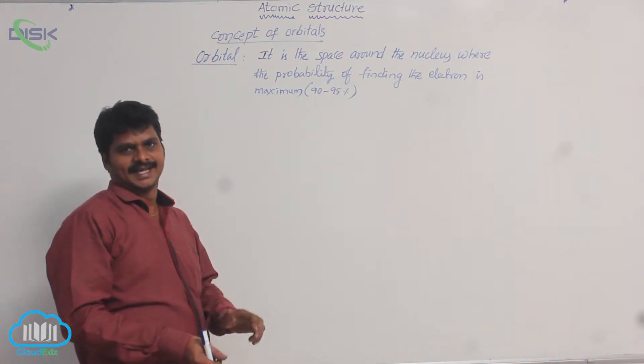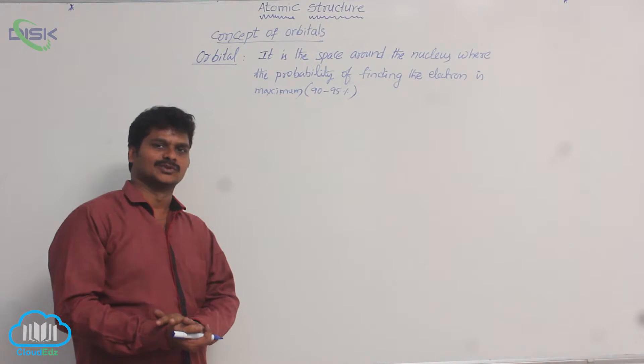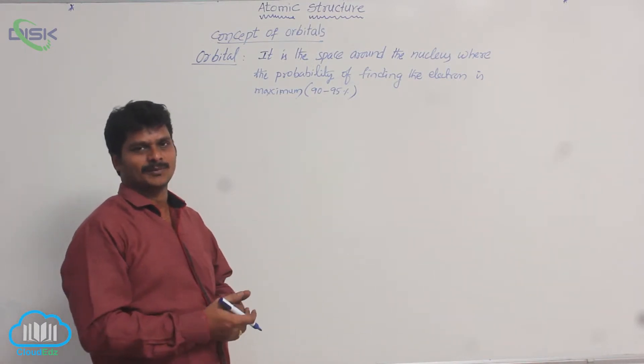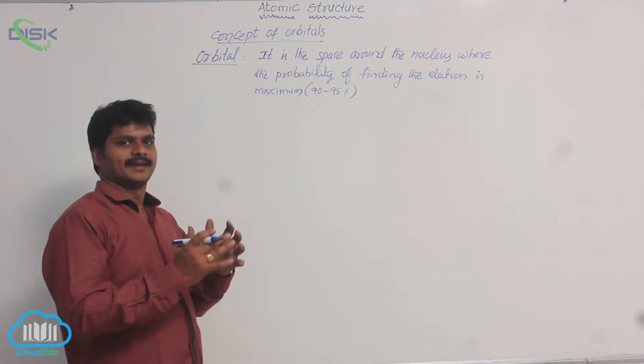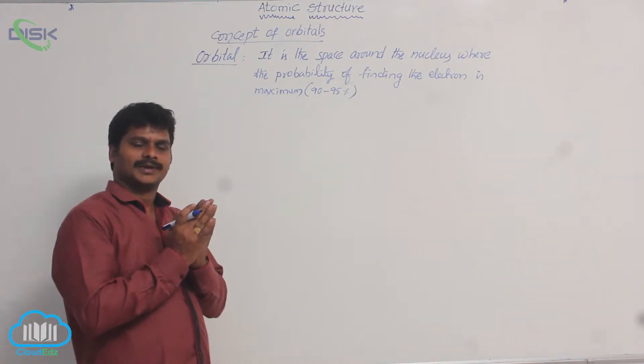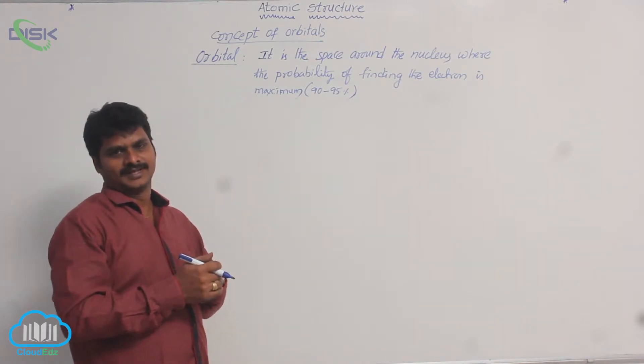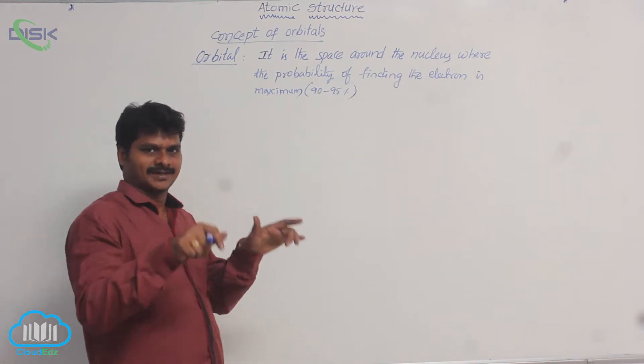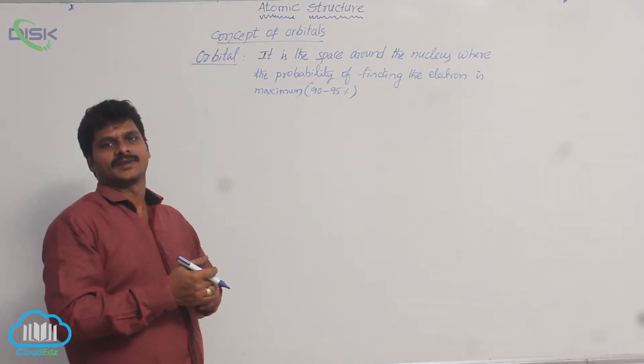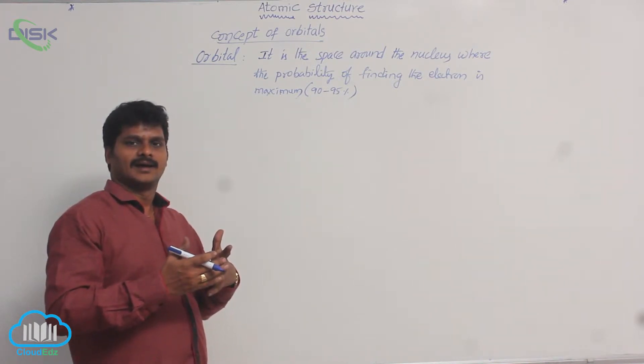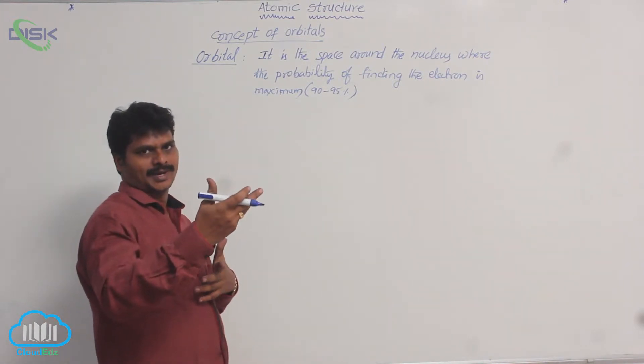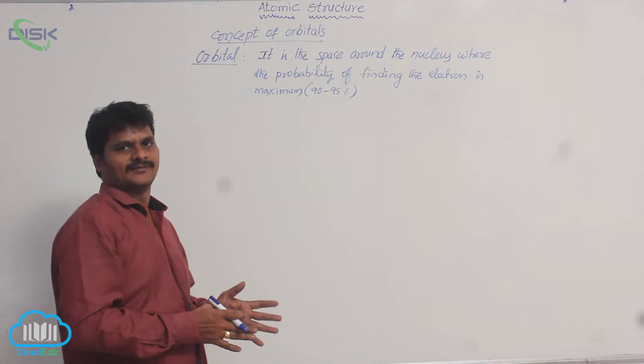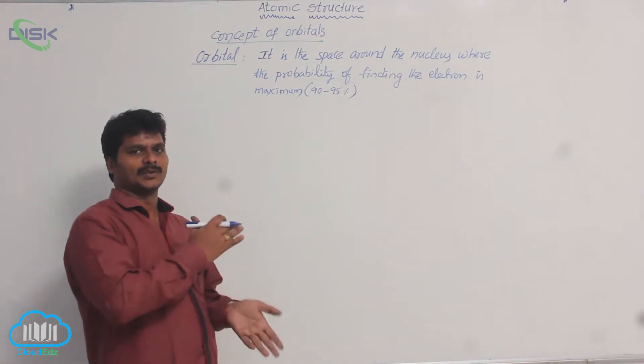Why? Because at a larger distance from the nucleus also, there will be some probability. Of course, maybe negligible probability, but it is not possible to determine the 100 percent probability. It is not possible to draw a sphere or circle around the nucleus at a larger distance to get the 100 percent probability because it is infinity.